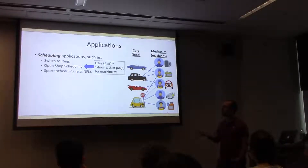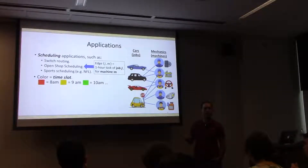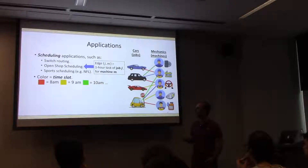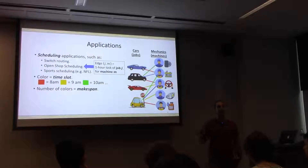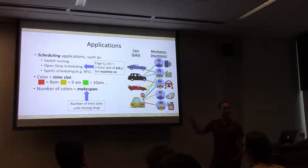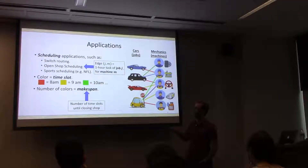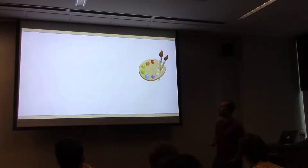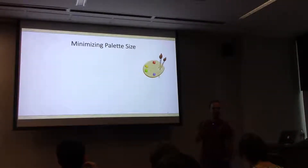What do the colors correspond to? The colors correspond to time slots. Red edges are tasks performed at 8 a.m., yellow at 9 a.m., and so on. The number of colors here will correspond to the makespan — the amount of time until we can close shop. What we really want to do is minimize the number of colors we use, minimize the palette size.